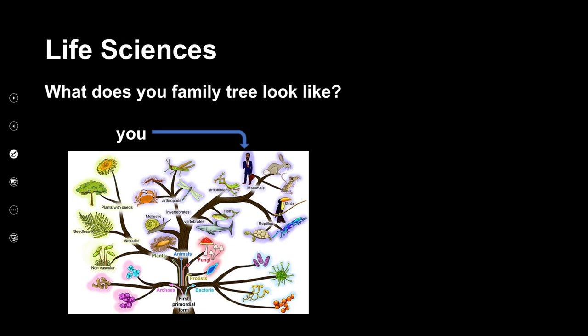The first question I'd like to ask you is, what does your family tree look like? If you have a look here, this is a family tree that shows how organisms have evolved. We start off here at the bottom of the trunk, down at the ground, where we have the first more simple forms of life. And as the branches go upwards, the life forms become more and more complex, until we see this is where you are over here.